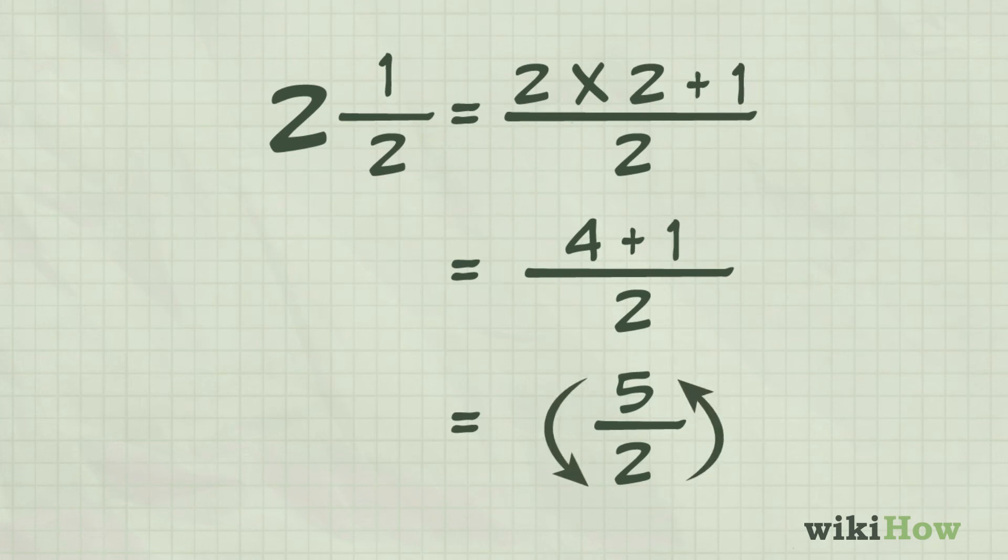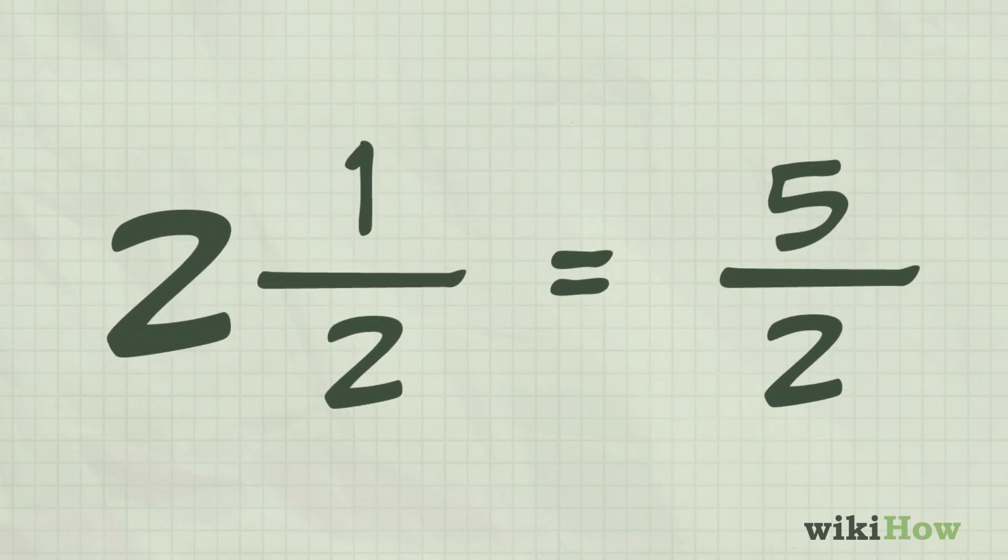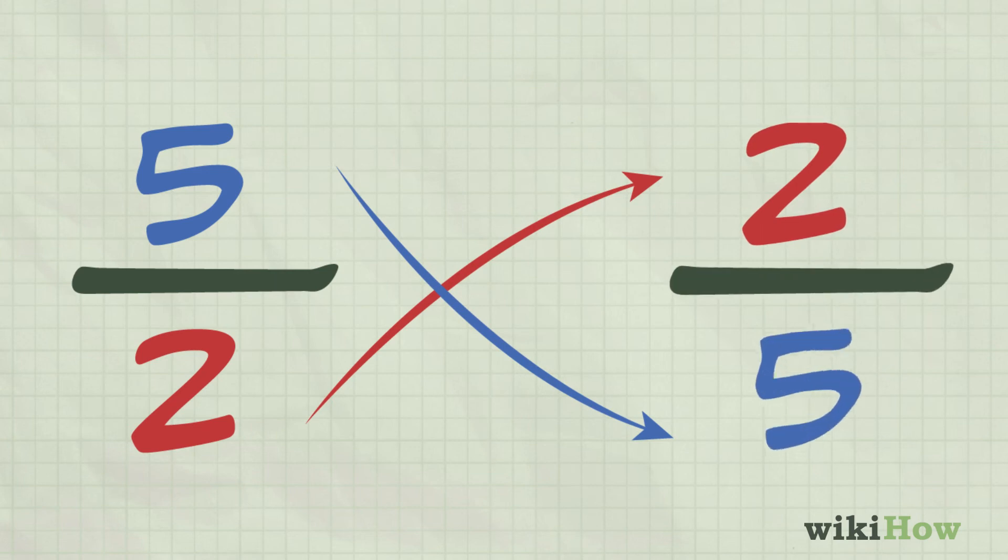Then invert the fraction to find the reciprocal. For instance, 2 and a half is the same as 5 over 2, and the reciprocal is 2 over 5.